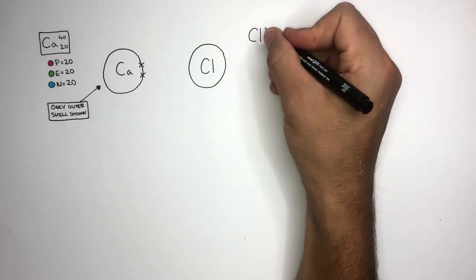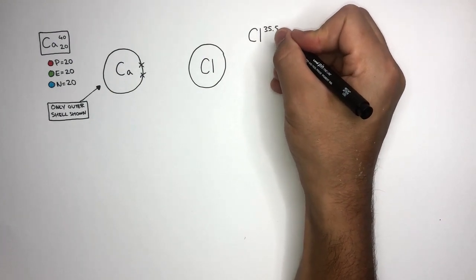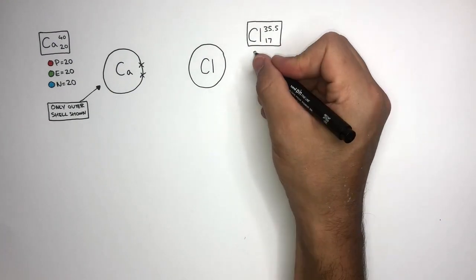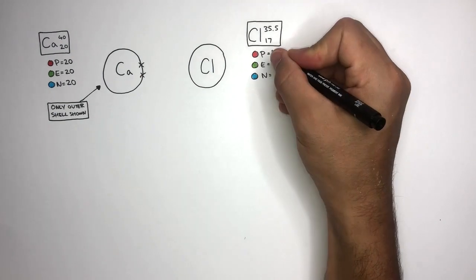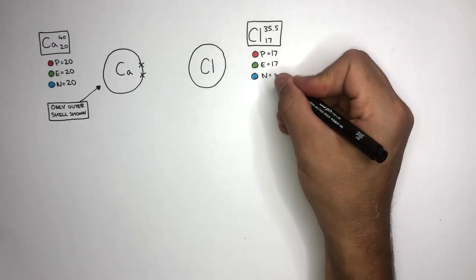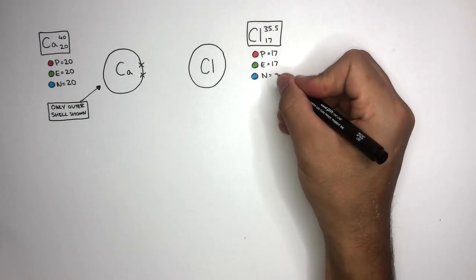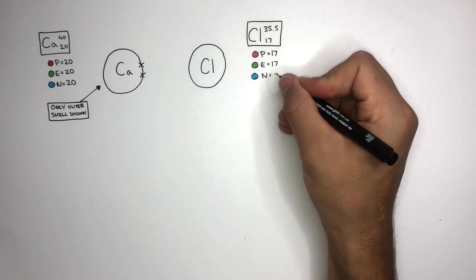Chlorine has a mass of 35.5 and an atomic number of 17. Using this information, Chlorine has 17 protons, 17 electrons, and we don't need to think about how many neutrons it has. This is for another video.